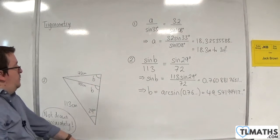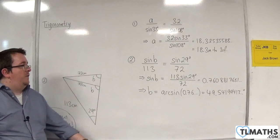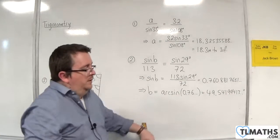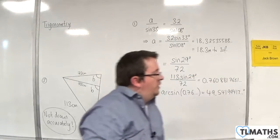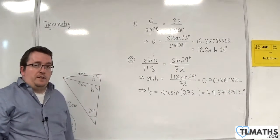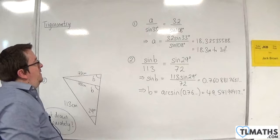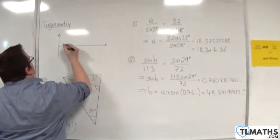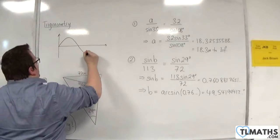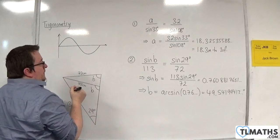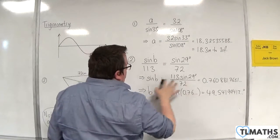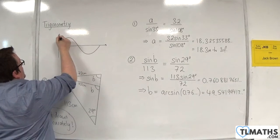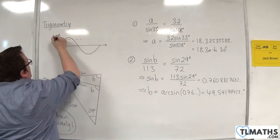Now, how can we work out what the other angle is? You can consider this using the sine curve. If you've seen the curve of Y equals sine X, we've looked at sine of B being equal to 0.76. The sine curve goes up to 1, so 0.76 is there.